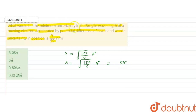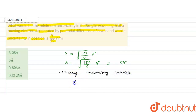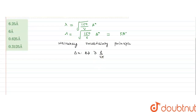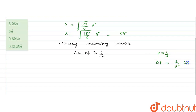Now we have to find out the minimum uncertainty in the de Broglie wavelength, so we will apply the Heisenberg uncertainty principle. The uncertainty in position and uncertainty in momentum cannot be exactly measured at the same time, and its mathematical expression is delta x times delta p greater than or equal to h by 4 pi. Since momentum equals h by lambda, the uncertainty in momentum delta p equals h upon lambda squared times delta lambda.